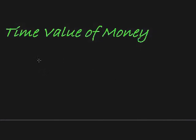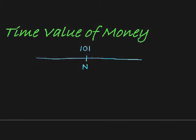In this lesson we're going to look at the time value of money. It sounds like a complicated topic but it's actually very simple. Imagine I come to a bank account in November and I see that there's R101 in this bank account, and I know that it earns one percent interest per month. A month ago there must have been R100 in this account — so in October that R100 earned one percent interest, which is R1.